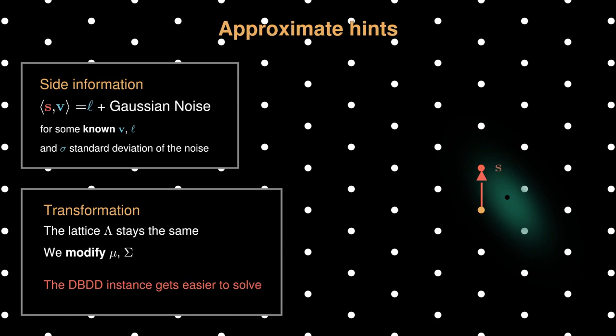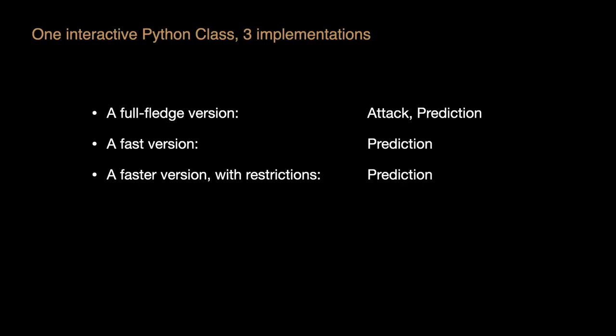So, let's check how is our prediction, and we also want to see how much security loss from integrating those hints. We implemented our framework in Python with Sage, and we have three implementations under the same API. For the full-fledged version, it keeps track of lattice bases, center and covariance of ellipsoid, and can launch a full attack at the end under feasible dimensions. It also provides prediction. The other two are lighter versions. They don't track that much information, but predict the security loss based on the changes of the volume and dimensions of lattice when integrating each hint. The last version is even faster but with more restrictions. Melissa will give a demo on how to use this framework implementation at the end.